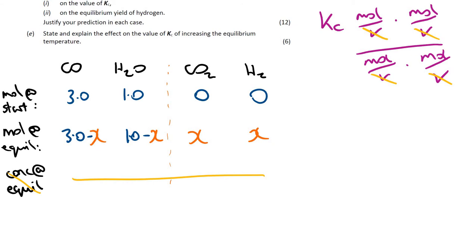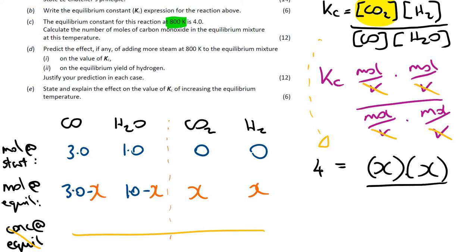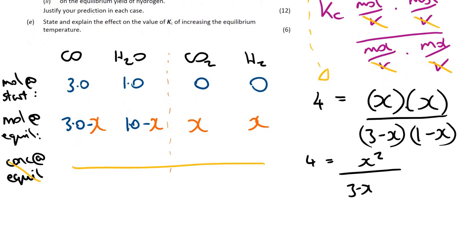I'm going to set up an equation using Kc. I'm told Kc = 4. So 4 equals the concentration of CO₂, which is x, times the concentration of H₂, which is x, divided by the concentration of CO, which is 3 - x, times the concentration of H₂O, which is 1 - x. So: 4 = x² / ((3 - x)(1 - x)).